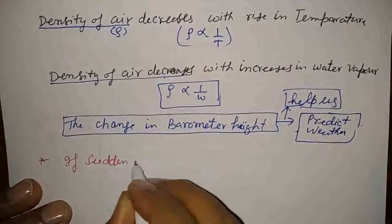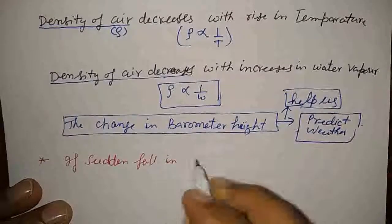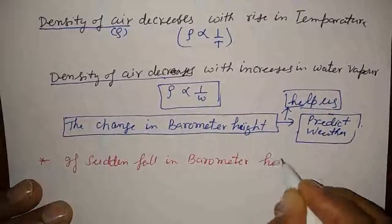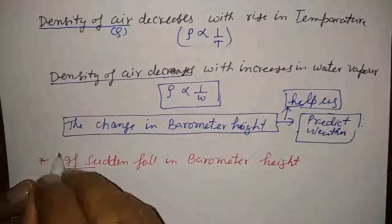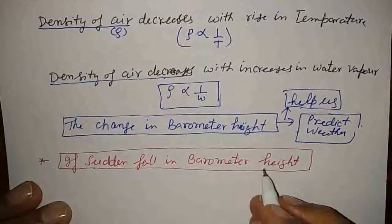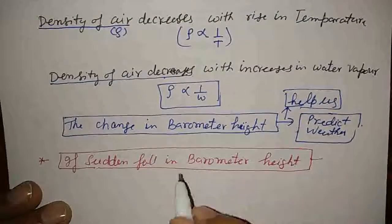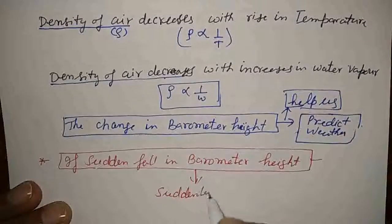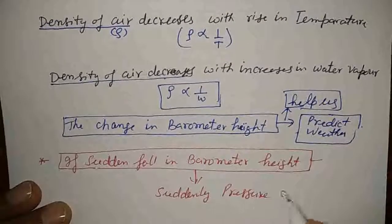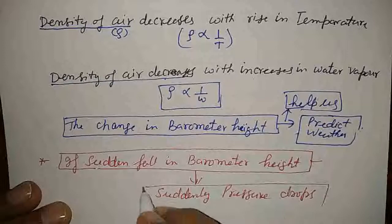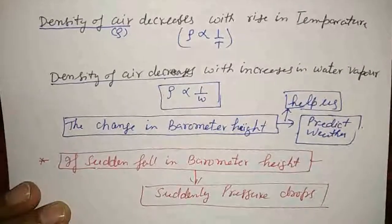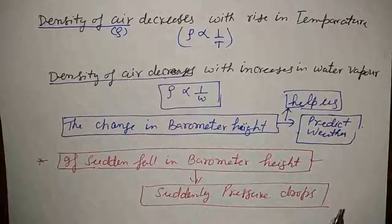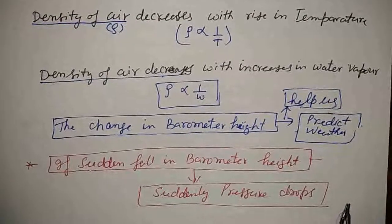If there is a sudden fall in barometer height — that is, suddenly pressure drops within 5 to 10 minutes or half an hour — it means air particles move away from the place, so the density is very low and the air column density is very less.